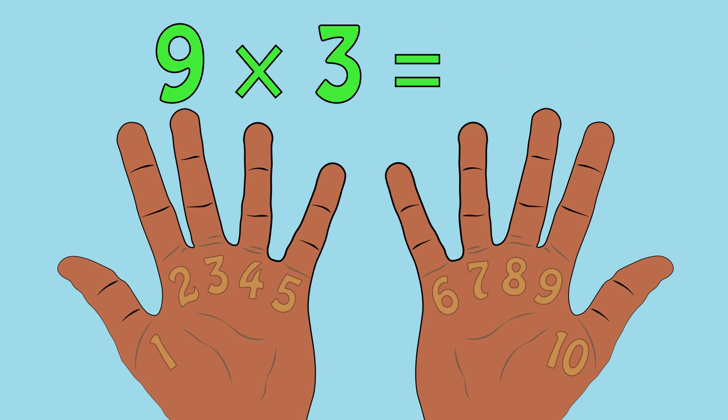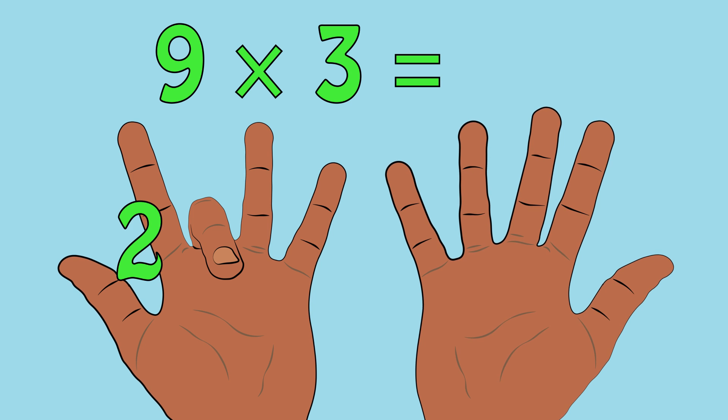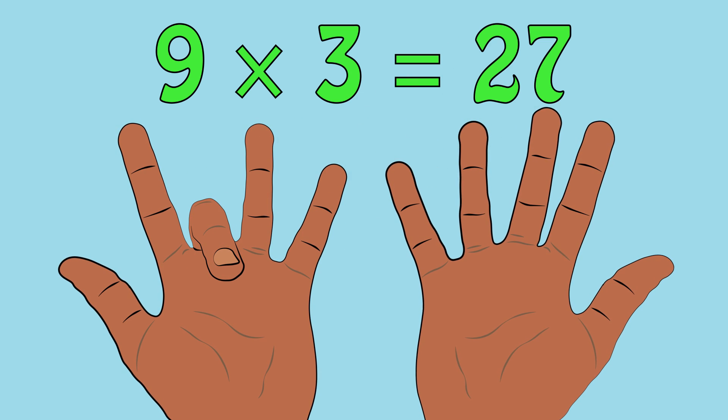For 9 times 3, you guessed it, we fold down the third finger, leaving 2 to the left and 7 to the right. 9 times 3 equals 27.